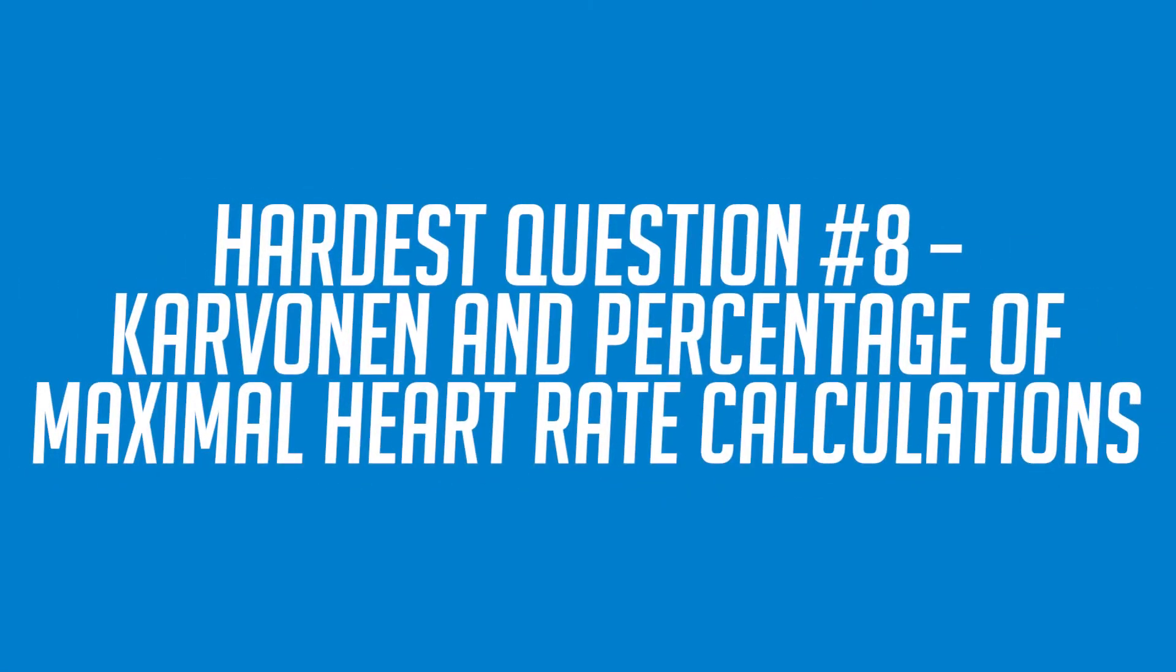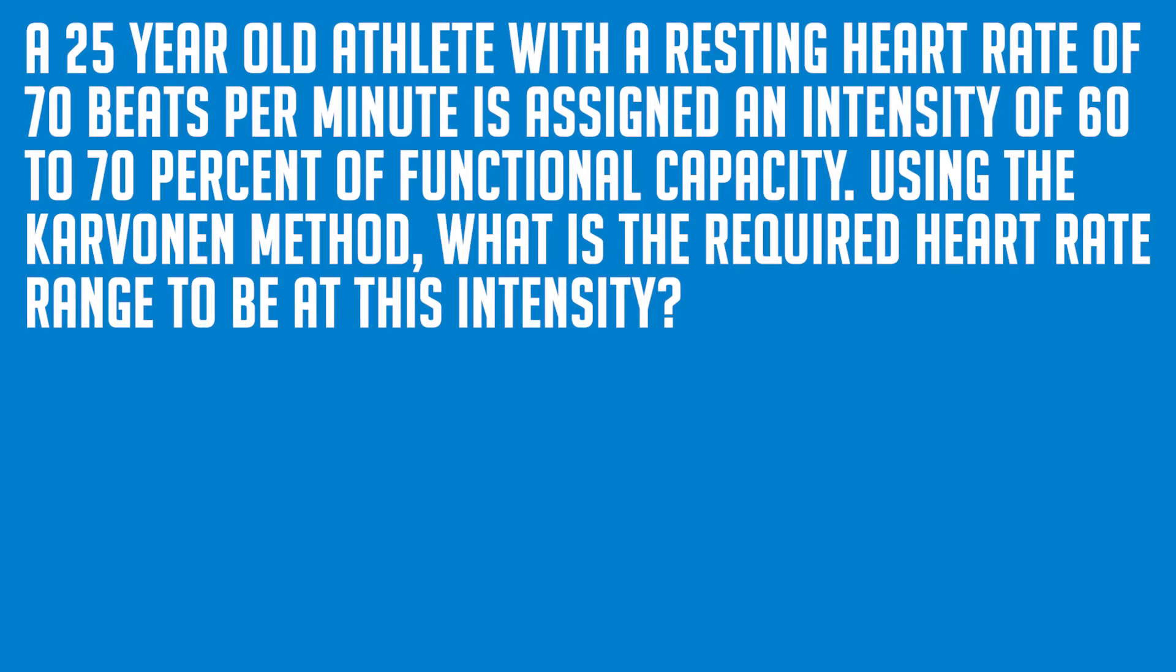Hardest question number eight, Karvonen and percentage of maximal heart rate calculations. You will be asked to assign an athlete the proper exercise intensity in terms of a heart rate range based on either the Karvonen method or the percentage of maximal heart rate method. Consider the following example. A 25 year old athlete with a resting heart rate of 70 beats per minute is assigned an intensity of 60 to 70 percent of functional capacity. Using the Karvonen method, what is the required heart rate range to be at this intensity?